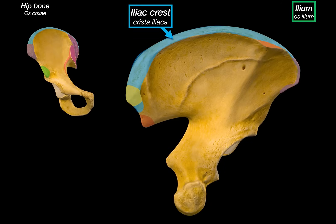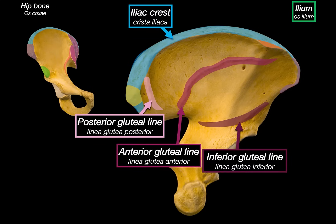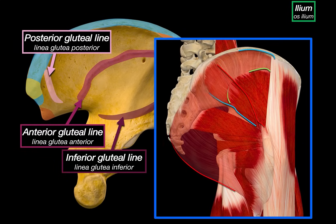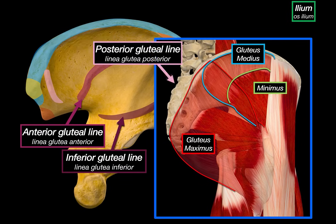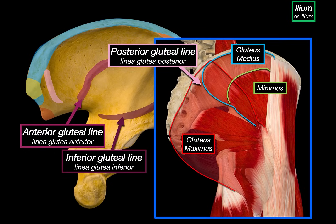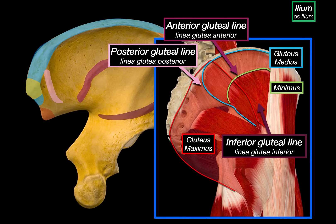Going back to the posterior view, this broad outer surface of the ilium is called the gluteal surface, and there are three lines running across it: the posterior gluteal line, the anterior gluteal line, and the inferior gluteal line. These exist because the gluteal muscles — gluteus maximus, medius, and minimus — originate here. The posterior gluteal line separates the origin zones of gluteus maximus and gluteus medius. The anterior gluteal line marks the border between gluteus medius and gluteus minimus. And the inferior gluteal line defines the lower boundary where gluteus minimus arises.